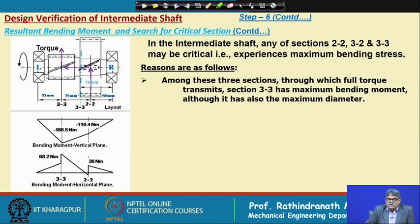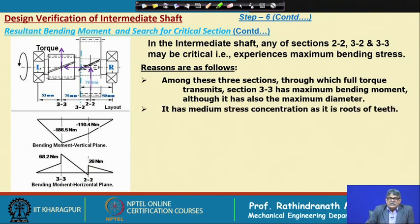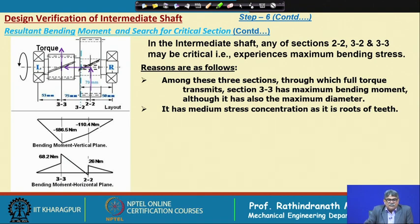Why are these three sections considered? Among these three sections, through which full torque transmits, section 33 has maximum bending moment although it also has the maximum diameter. It has medium stress concentration as it is the root of teeth — with gear teeth present there is some stress concentration, but not as severe as in the case of steps or keyways.